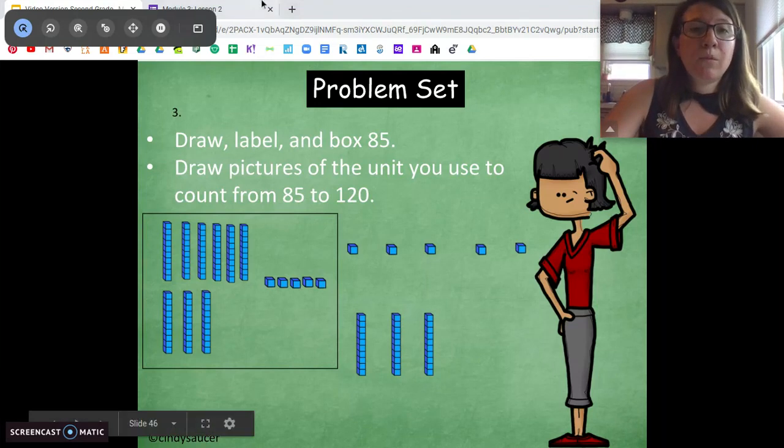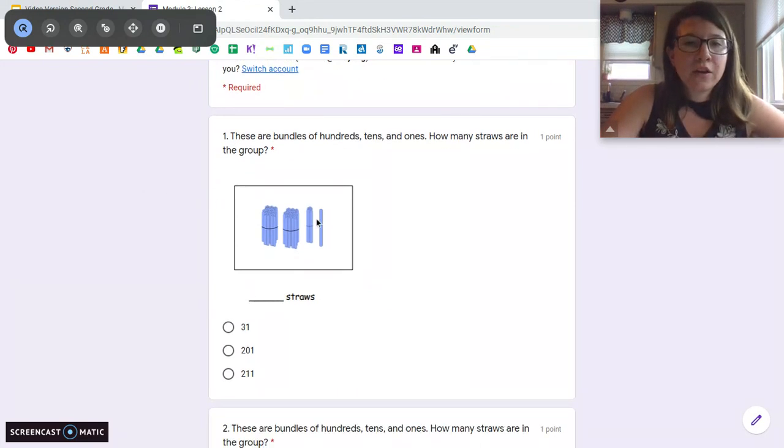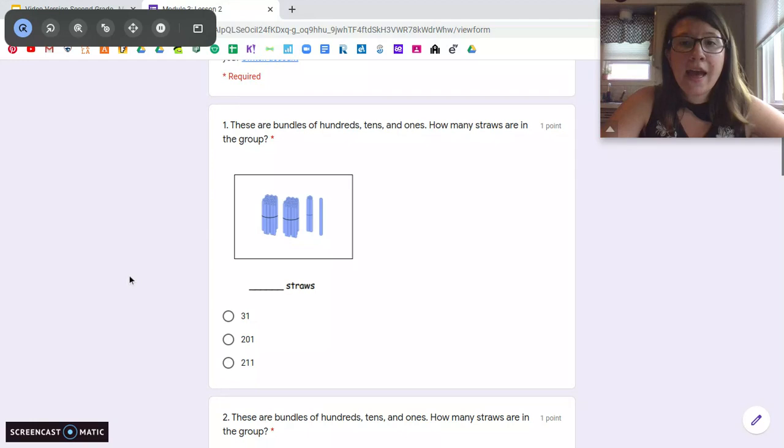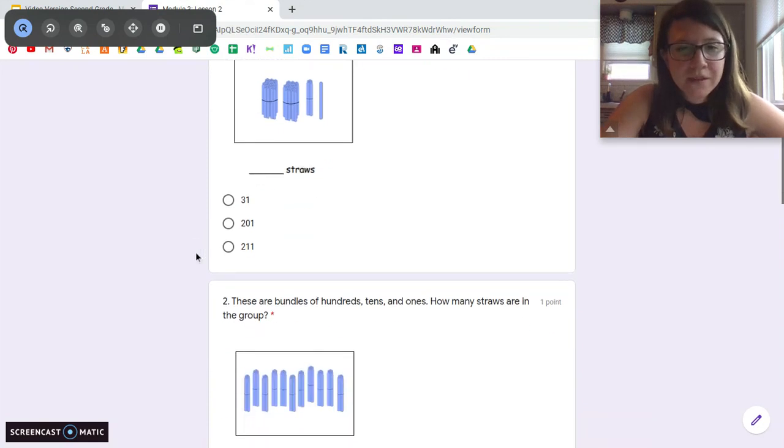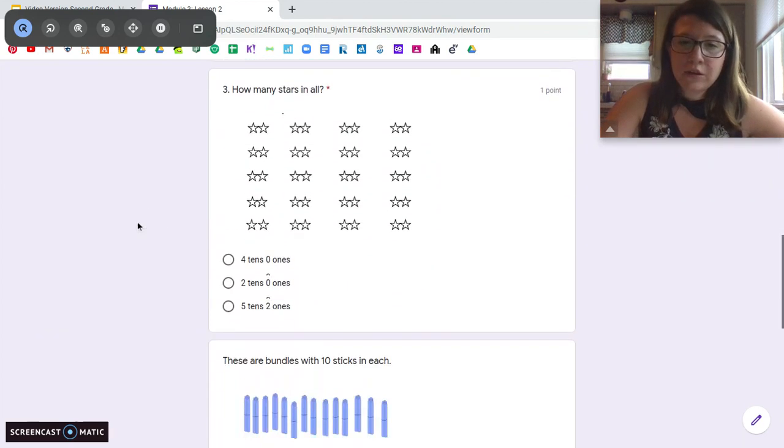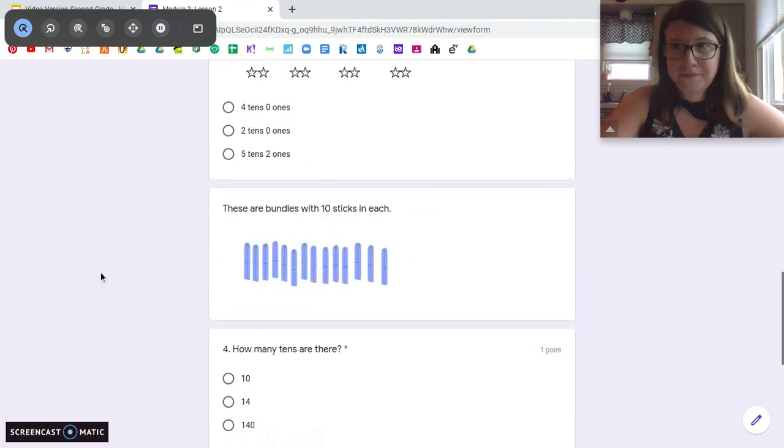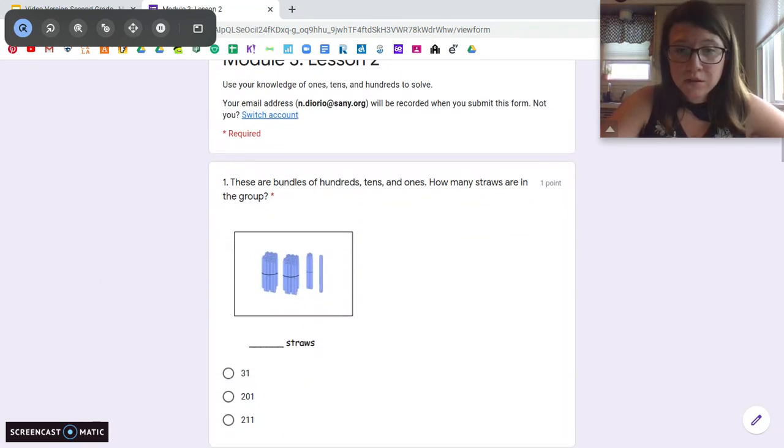So for today, you're going to be looking at a picture and counting how many straws are in the group. These bundles right here, the bigger ones are groups of 100 and these smaller ones are groups of 10 and these are your ones. So this is hundreds, tens, and ones. And you're going to pick the best answer. Same thing down here. These are groups of 10 and you're going to tell me how many stars there are. Okay. So you're going to count your hundreds, tens, and ones. Pick the best answer.